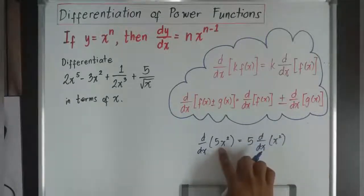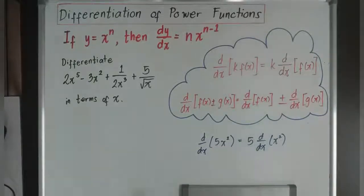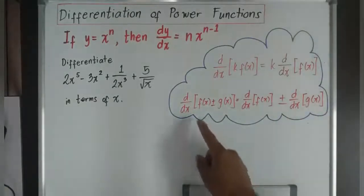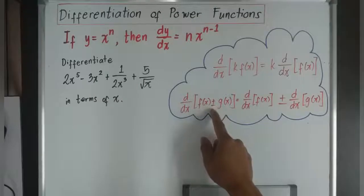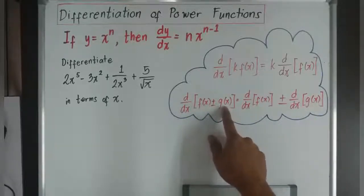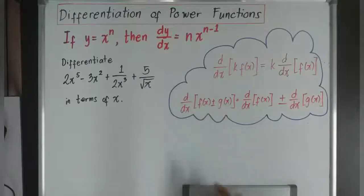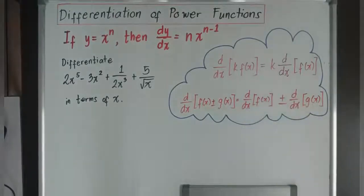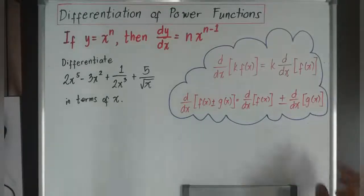The second rule is what you call the sum or difference rule in differentiation. If you have the derivative of a first function added or subtracted to a second function, you just separate them and copy whatever the operation is — whether it is addition or subtraction.